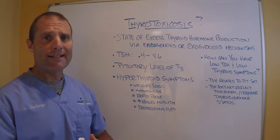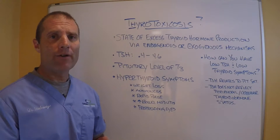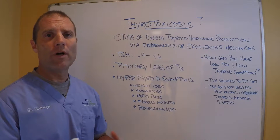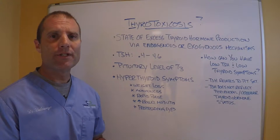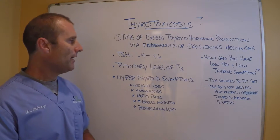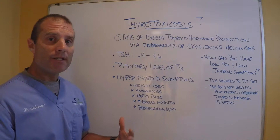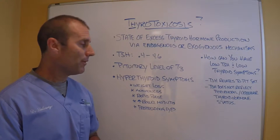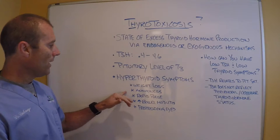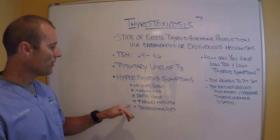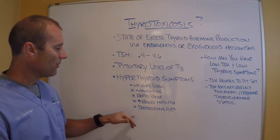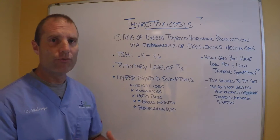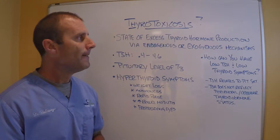That excessive amount of thyroid hormone overwhelms the cellular system and it increases the cellular metabolism. So you get weight loss, anxiousness, rapid pulse, increased bowel motility, and the protruding eyes.